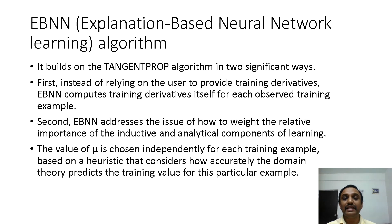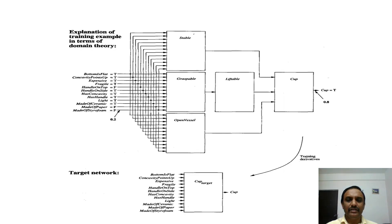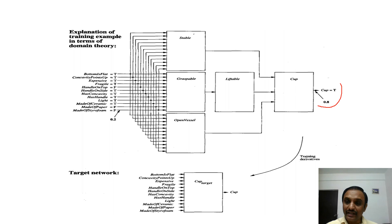In EBNN, the value of mu is chosen independently for each training example, based on a heuristic that considers how accurately the domain theory predicts the target value for that particular example. This is the network representation for the explanation-based neural network algorithm. Using given training examples and domain theory, EBNN first constructs a new fully connected feed-forward network to represent a target function.